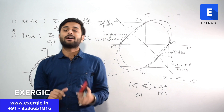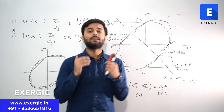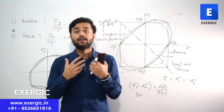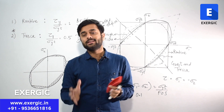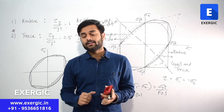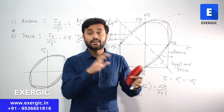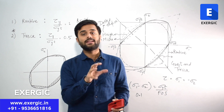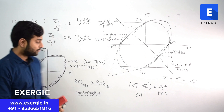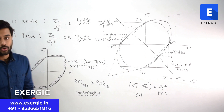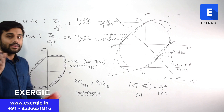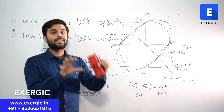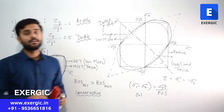Both Maximum Shear Stress Theory and Distortion Energy Theory are applicable with good accuracy for ductile materials. Between the two, Tresca is more conservative. The theory with less region of safety will always predict larger dimensions because it demands a lower stress level to call the design safe, requiring more material and increasing the overall cost of manufacturing.